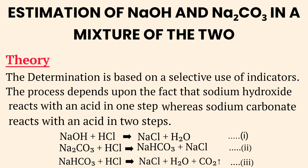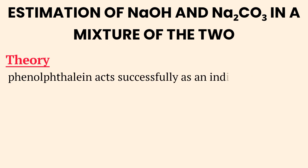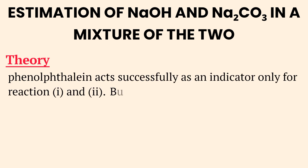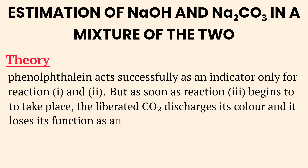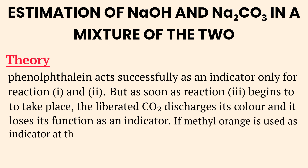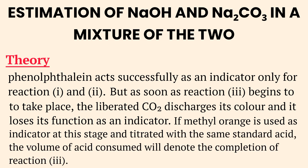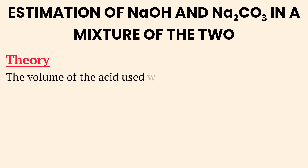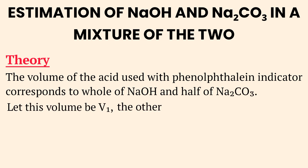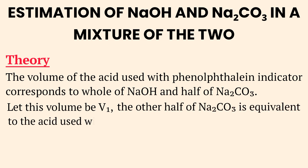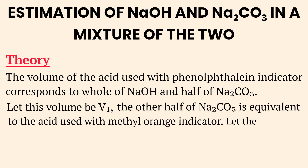Now here's the interesting part. Phenolphthalein acts successfully as an indicator only for reactions one and two, but as soon as reaction three begins, the liberated carbon dioxide removes the color of the indicator and phenolphthalein loses its function. At this stage, if we use methyl orange as the indicator and continue titrating with the same standard acid, the volume of acid consumed will indicate the completion of the third reaction. The volume of acid used with phenolphthalein corresponds to the entire amount of sodium hydroxide and half of sodium carbonate. Let this volume be called V1.